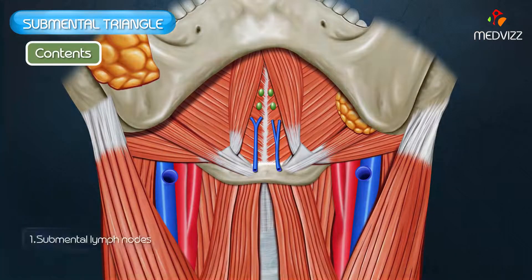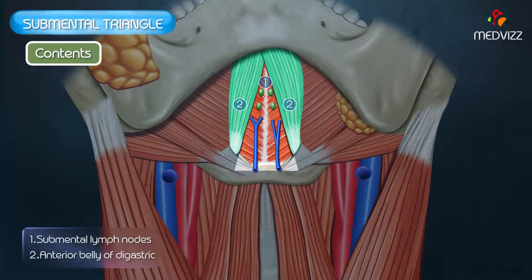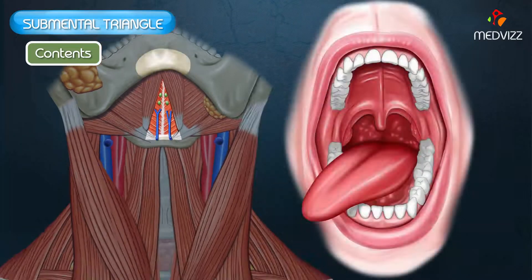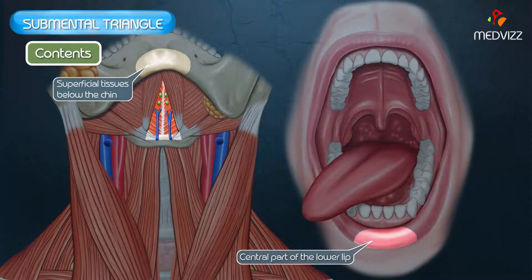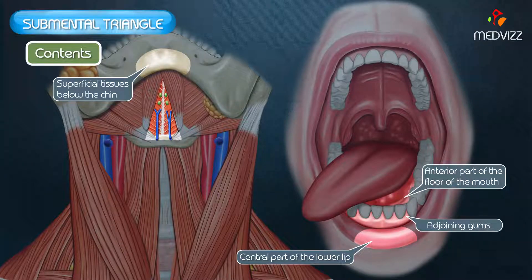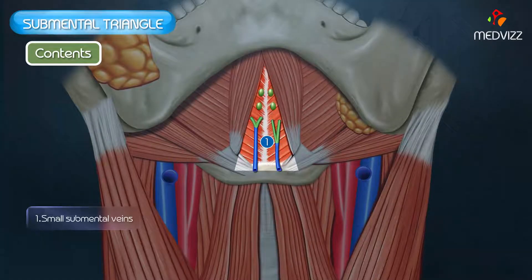The contents of the submental triangle include two to four small submental lymph nodes situated in the superficial fascia between the anterior bellies of the digastric muscles. These drain the superficial tissues below the chin, the central part of the lower lip, the adjoining gums, the anterior part of the floor of the mouth, and the tip of the tongue. Their efferents pass to the submandibular lymph nodes. Two small submental veins join to form the anterior jugular vein in this triangle.